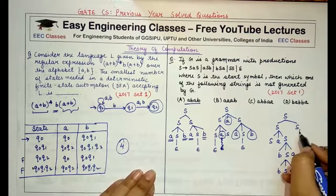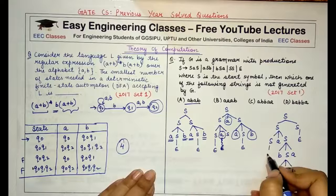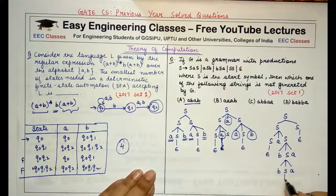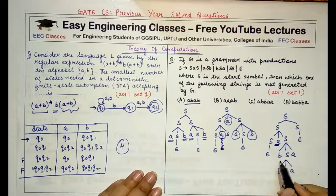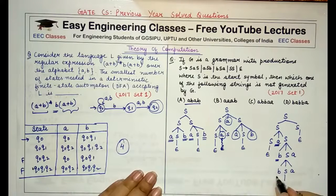And I replace this S with epsilon and this S with epsilon, so what am I getting? a b b b a and a. So this is the final answer for this.